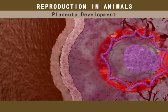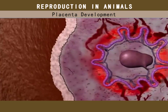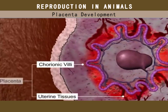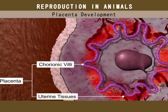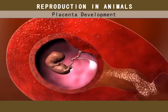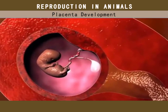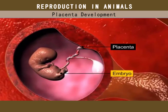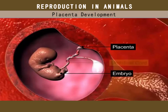As the villi grow further, they interlock with the uterine tissue to form the placenta, a structural and functional unit between the developing embryo and the mother's body. Initially, the embryo is attached to the placenta, but as it develops, it moves away from the placenta and remains connected to it by the umbilical cord.